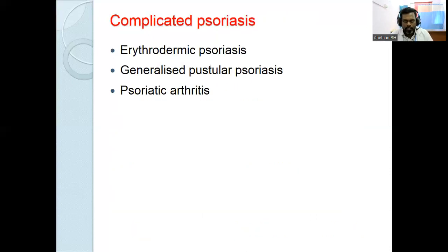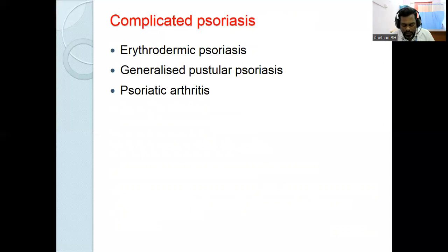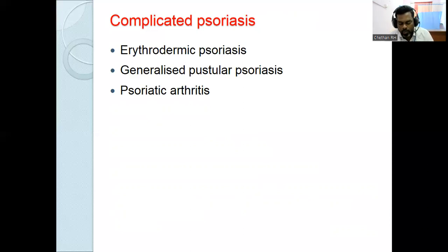Erythrodermic psoriasis involves more than 90% body surface area. In pustular psoriasis there are sterile pustules — yellow-colored in fresh lesions and brown-colored in old lesions.